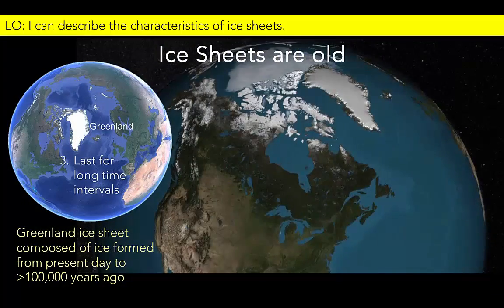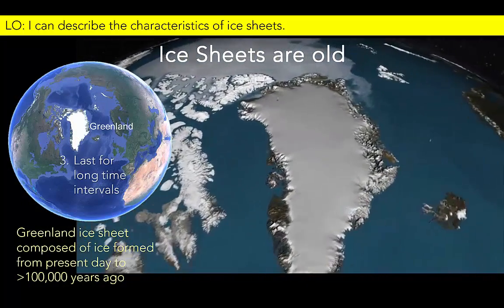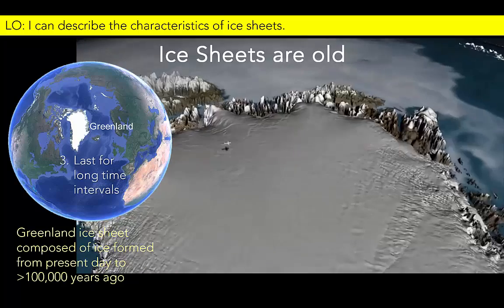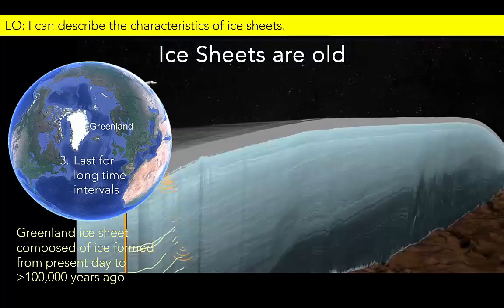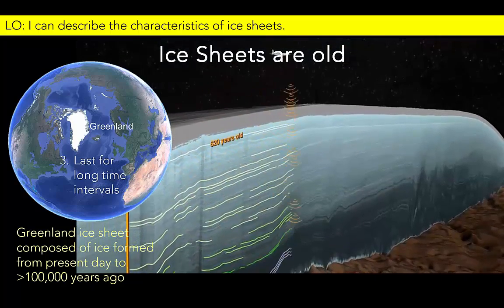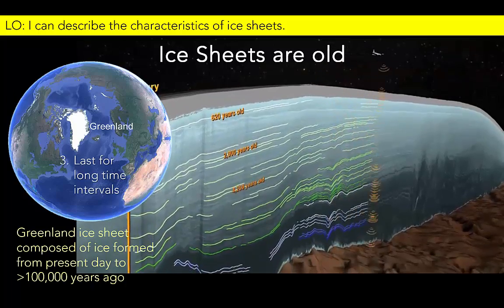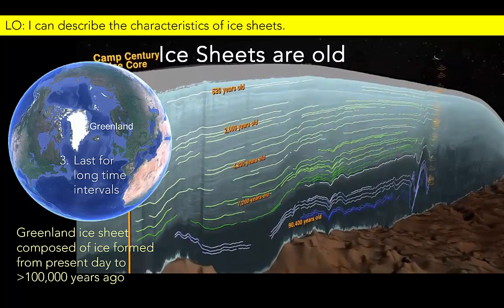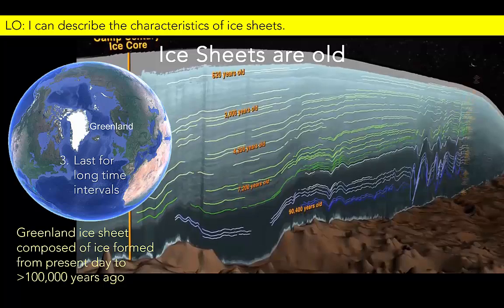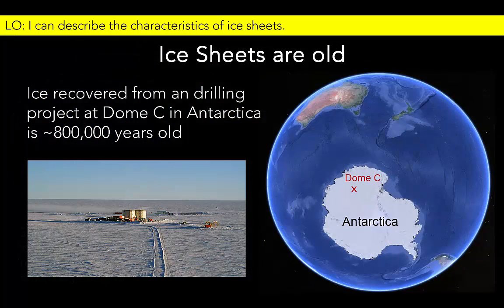Ice sheets contain ice formed recently, but they also have layers of ice that were formed up to hundreds of thousands of years ago. For example, some of the ice layers at the base of the Greenland ice sheet may be more than 100,000 years old. The thicker ice on Antarctica extends even farther back in time. The European project for ice coring in Antarctica has drilled the oldest existing ice core, which contains 800,000-year-old ice from a location in Antarctica known as Dome C.